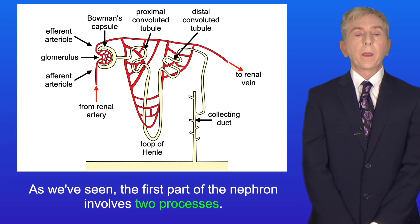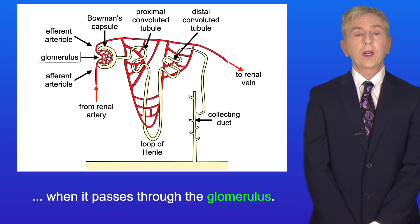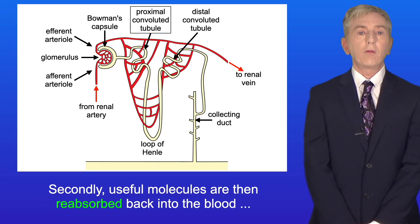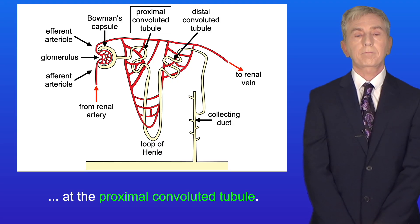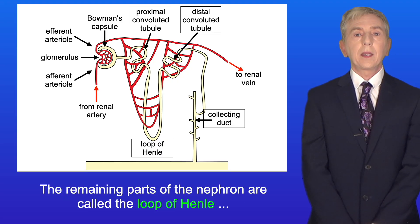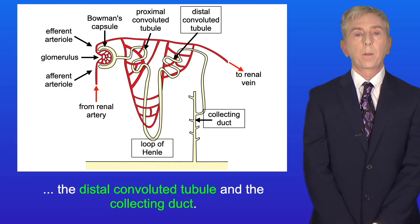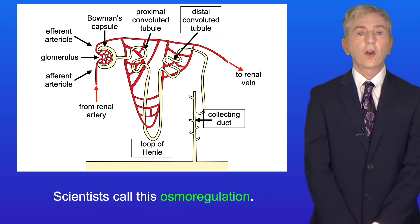So the first part of the nephron involves two processes: firstly, molecules are filtered out of the blood when it passes through the glomerulus; and secondly, useful molecules are then reabsorbed back into the blood at the proximal convoluted tubule. The remaining parts of the nephron are called the loop of Henle, the distal convoluted tubule, and the collecting duct. These regions are involved in regulating the concentration of water in the blood — scientists call this osmoregulation.